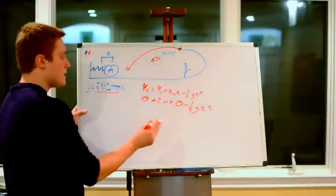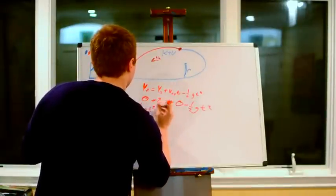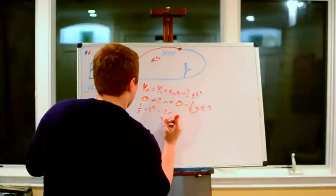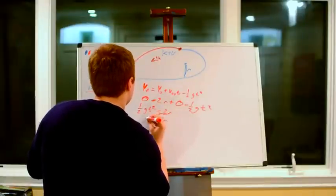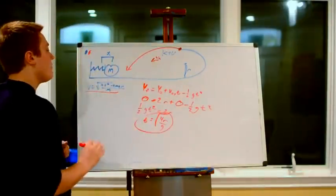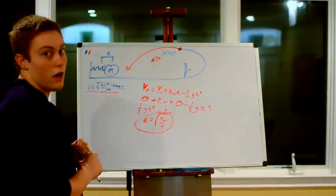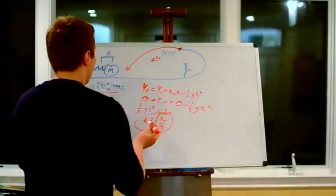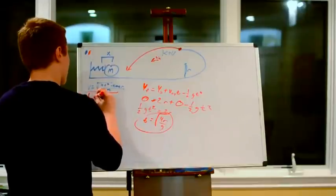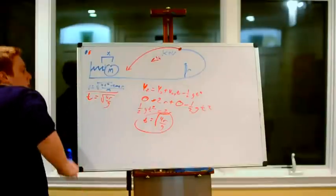Solving this: one half g t squared equals 2r, which gives us time equals the square root of 4r over g. This is our time of flight. Knowing the time of flight makes it easier to find the range. I'll write this over here so we remember: time equals the square root of 4r over g.